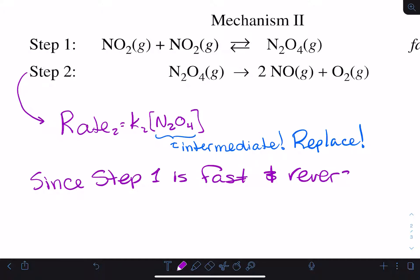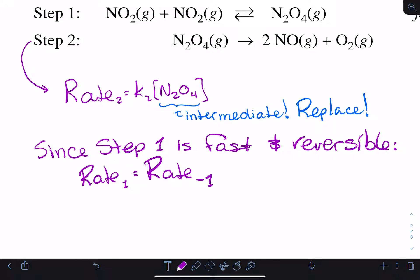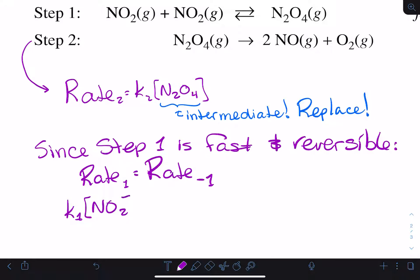The rate of the forward reaction for step 1 is going to be equal to the rate of the reverse reaction for step 1, and therefore their rate laws will be equal. The forward rate law for step 1 is the rate constant times NO2 squared; the reverse is the reverse rate constant times N2O4.